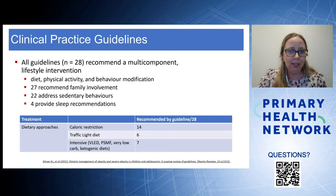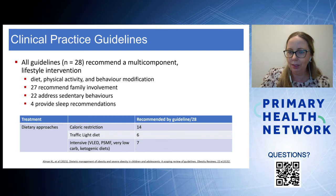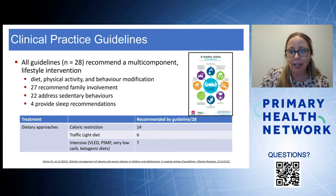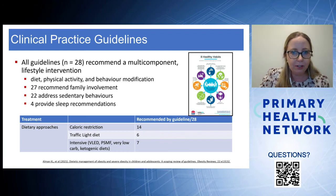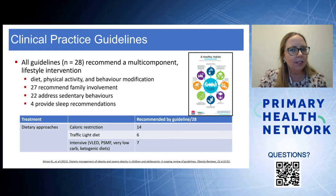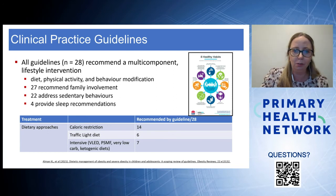Our review found all guidelines recommended a multi-component lifestyle intervention including diet, physical activity and behaviour modification, with a minimum of 26 contact hours over 6 to 12 months. Twenty-seven of 28 guidelines recommended family involvement, 22 addressed sedentary behaviours, and eight recommended addressing sleep behaviours. These are all covered in the eight healthy habits introduced last week. Dietary approaches recommended include calorie restriction, and for more severe obesity, intensive or prescriptive interventions such as very low energy diets or very low carbohydrate diets.